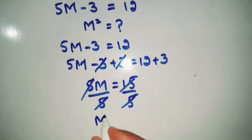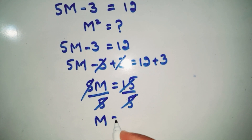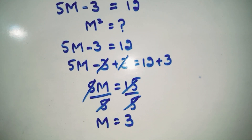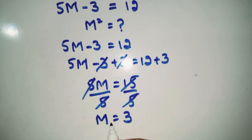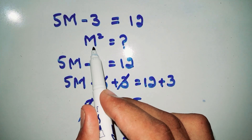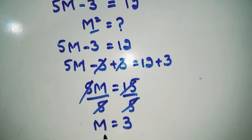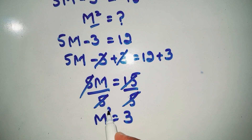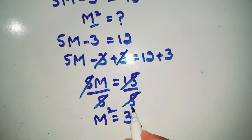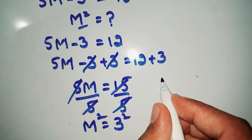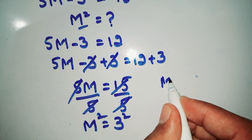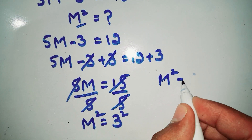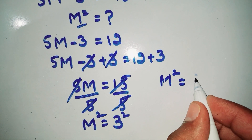So we get m is equal to 3. Now we have to find the value of m square, not m. So we square both sides: m square is equal to 3 square.